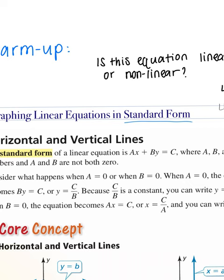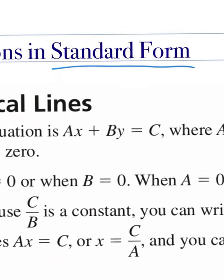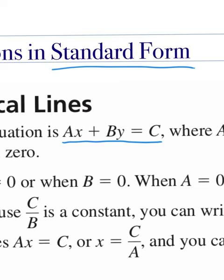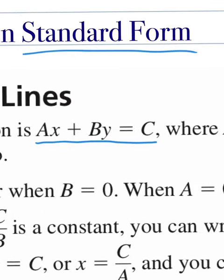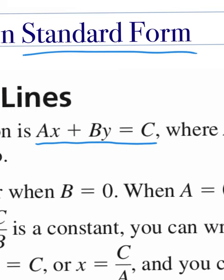Standard form is when your linear equation involving x and y is set up as ax plus by equals c, where a, b, and c are constants — meaning numbers. So a, b, and c will be numbers and x and y are your variables. You're not going to see a, b, and c in the actual equation — just numbers — but this is the standard form.